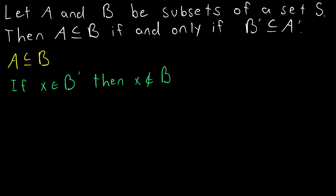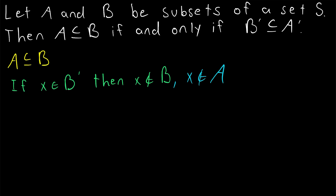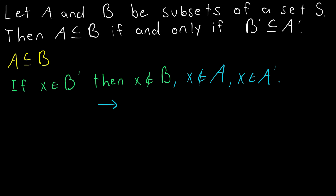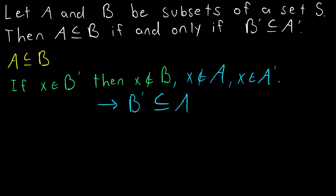However, if X is not an element of B, then it also cannot be an element of A. This implies that X is not an element of A, because if X were an element of A, it would also have to be an element of B since A is a subset of B — but we know that X is not an element of B. Thus, since X is not an element of A, by definition, X is an element of A complement, which we're writing as A prime. We've just shown that every element of B complement is also an element of A complement. Therefore, A being a subset of B implies that B complement is a subset of A complement.